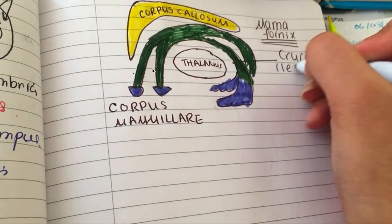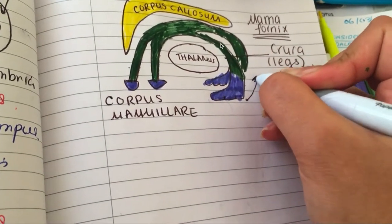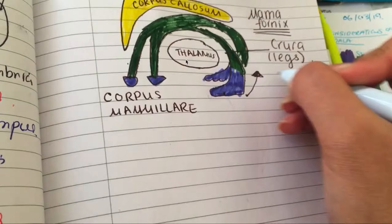Now think of this like an animal, it's the mama fornix. So it's like the mother, right? And she's protecting her egg, and the egg would then be the thalamus, which is over here.